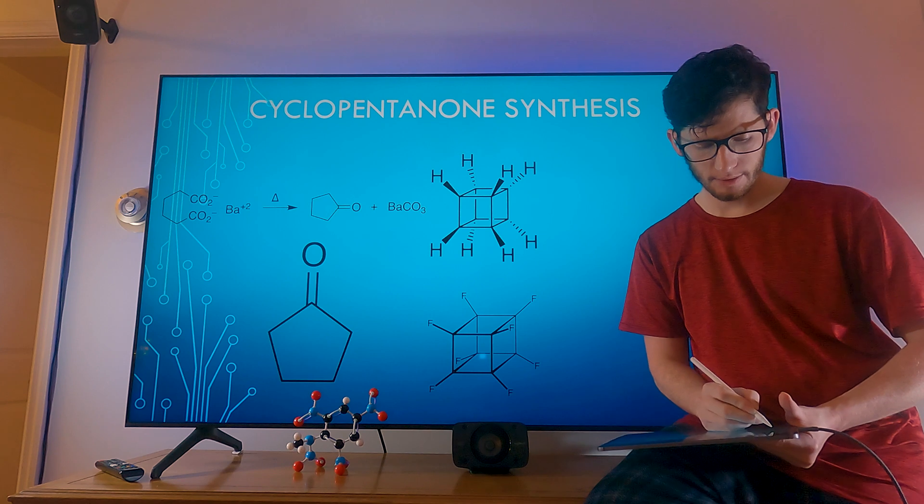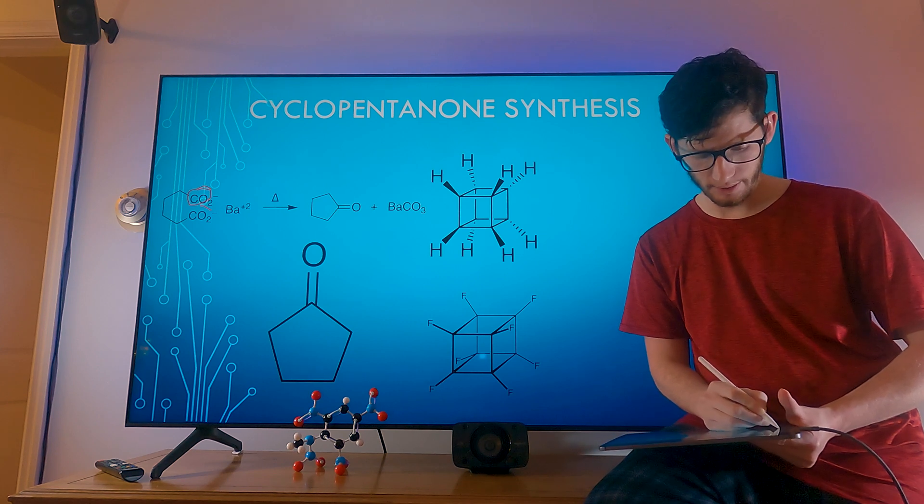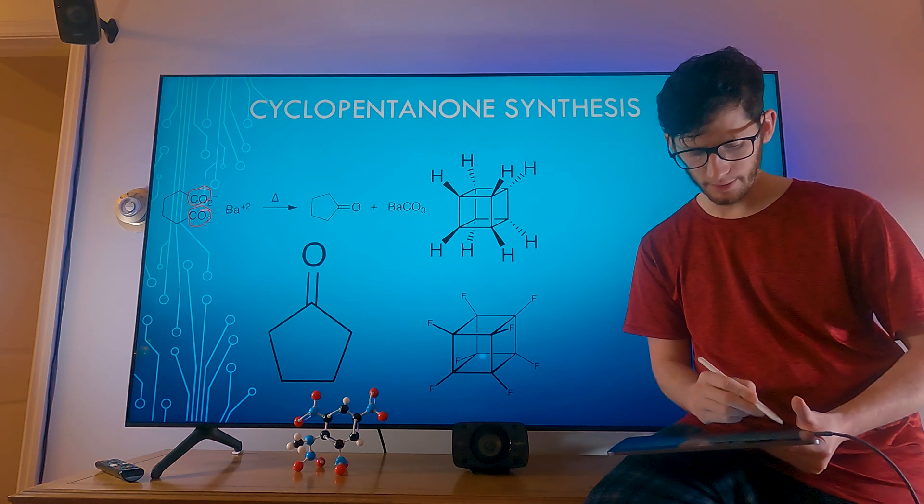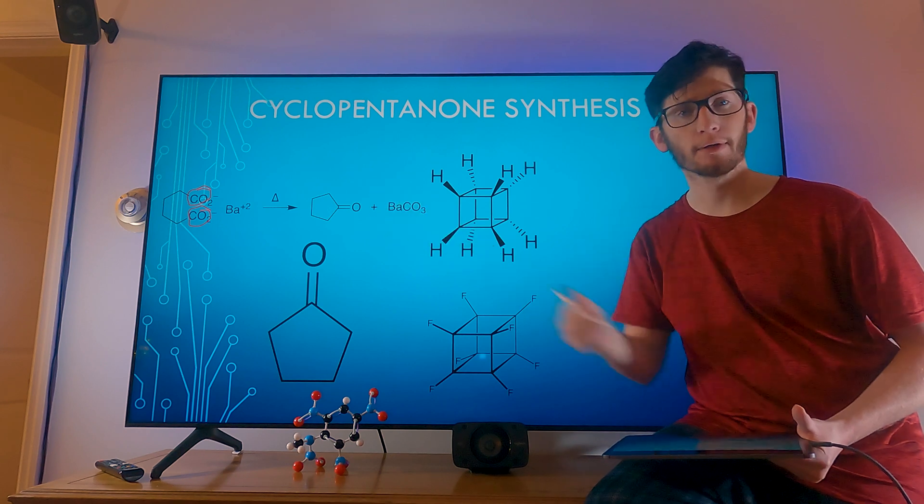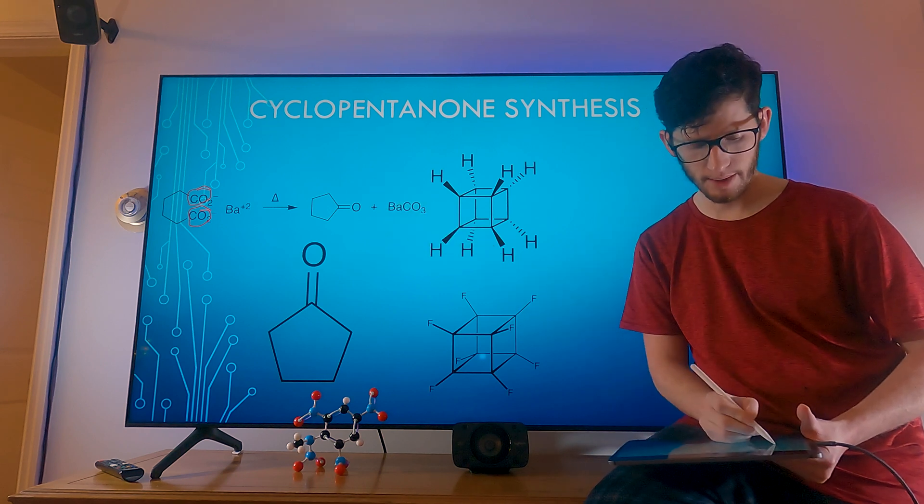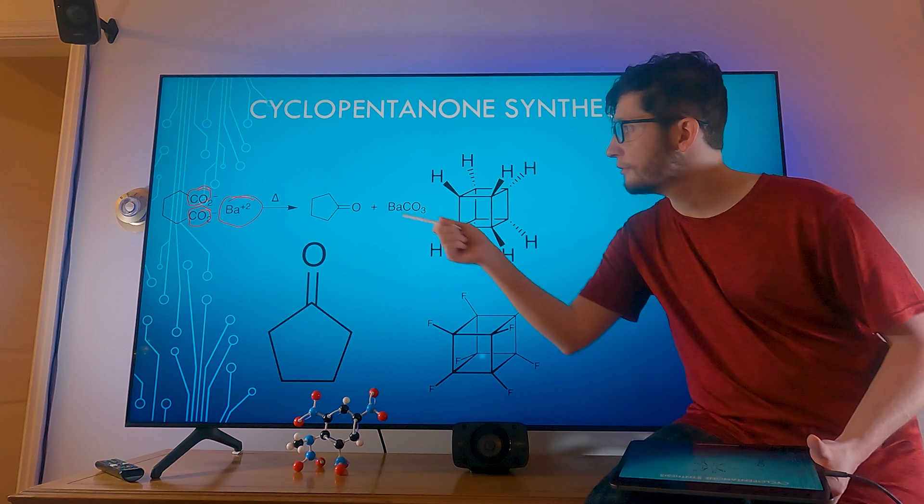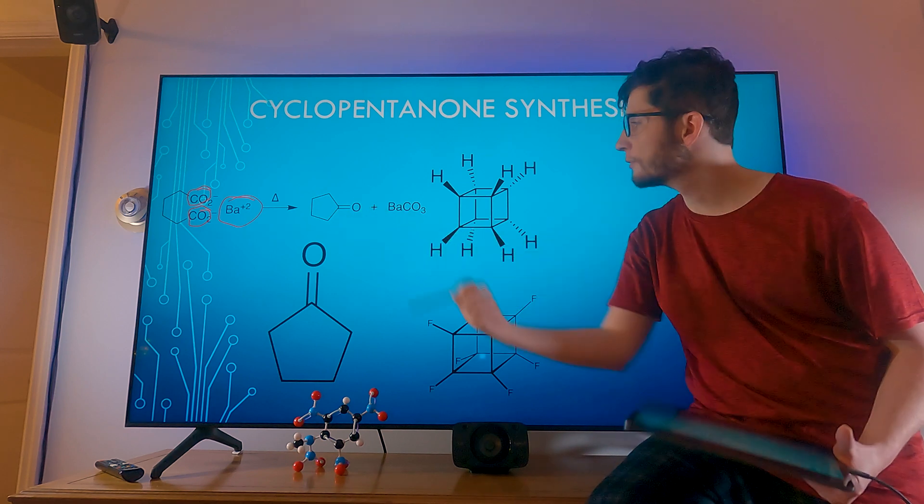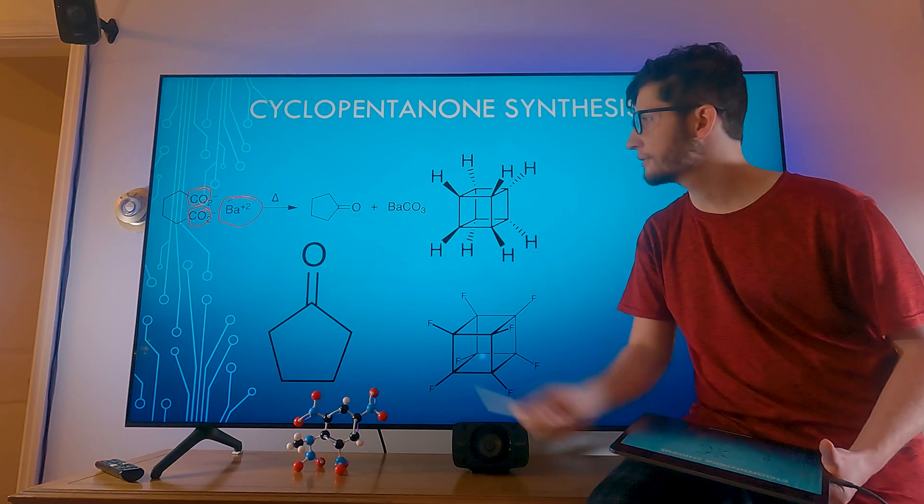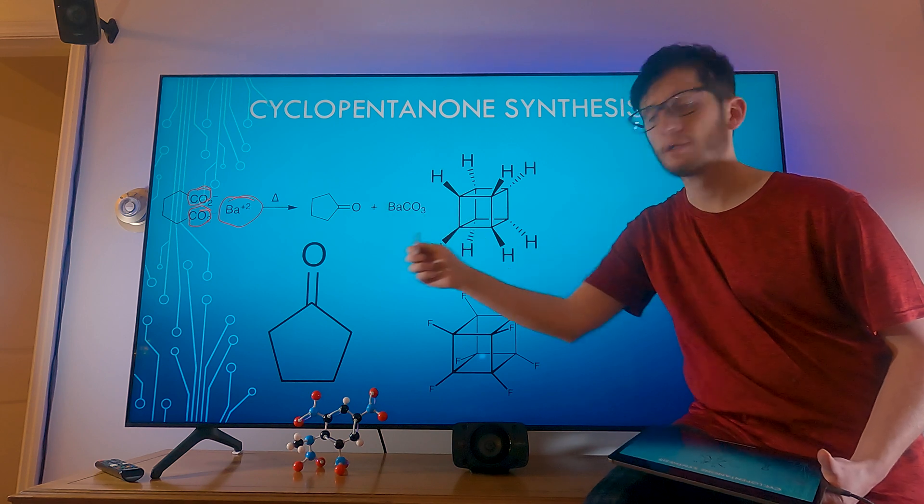So that means the two acids right here on adipic acid are going to be reacted with the barium hydroxide to form a ring. That's what a catalytic decarboxylation is. We're going to be left with tar.